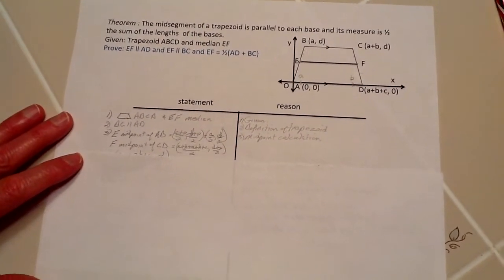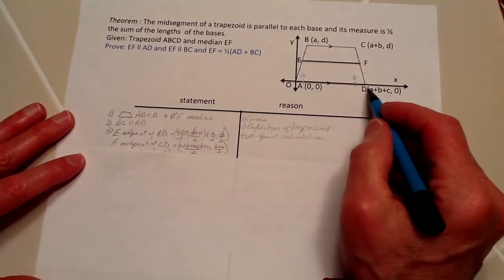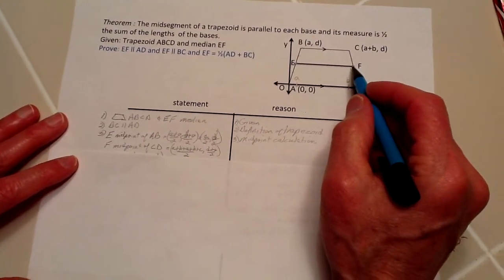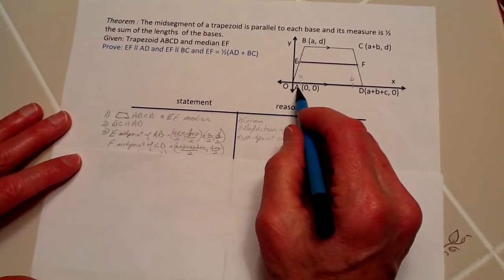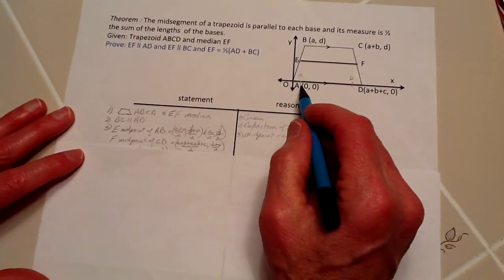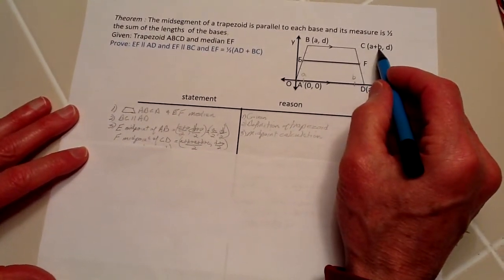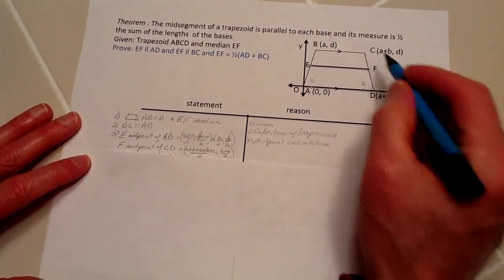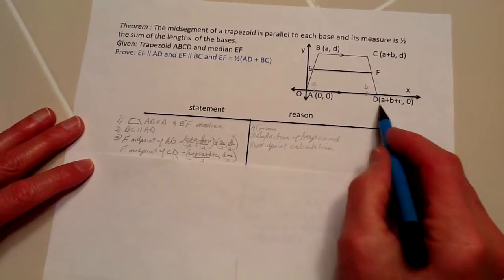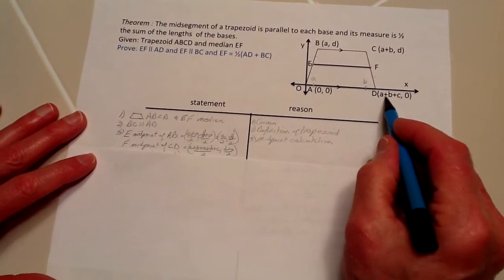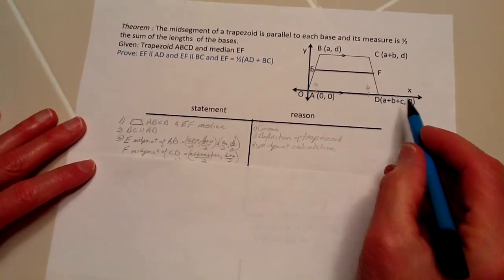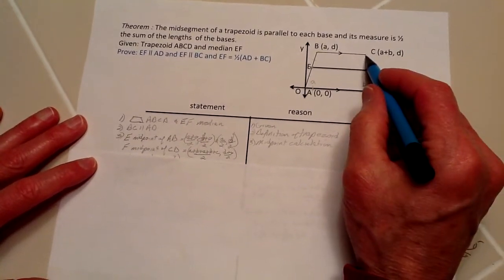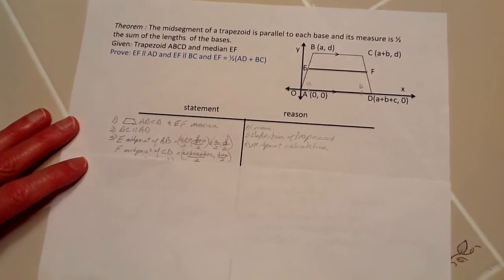Now let's find where F is. Here's D over here at ABC, and this is F. F is going to be the addition of AB plus the midpoint from this point to this point, which is AB plus C divided by two. The elevation or altitude is D, so it's one-half of that, using the midpoint calculation.